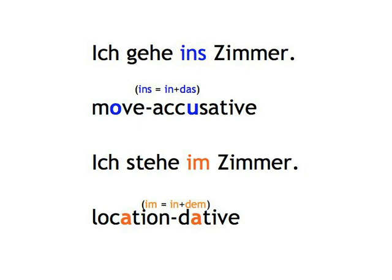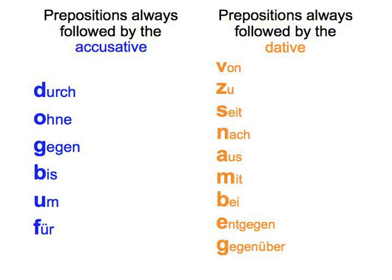Let's take a minute now to revise prepositions. Remember, there are some that must always be followed by the accusative: durch, ohne, gegen, bis, um, für.